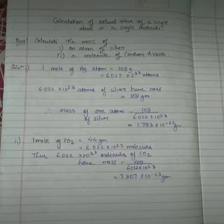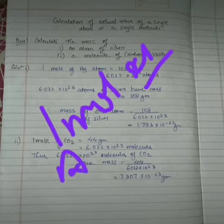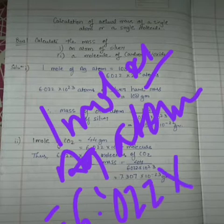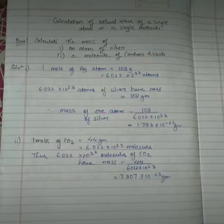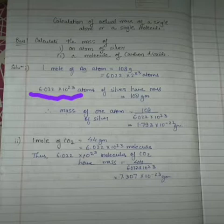One mole of silver atom will be equal to 6.022 × 10²³ atoms of silver. So, 6.022 × 10²³ atoms of silver both represent one mole of atoms.